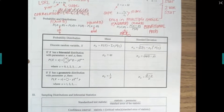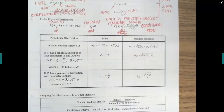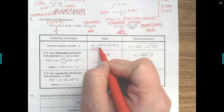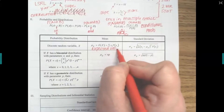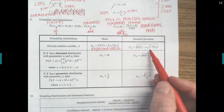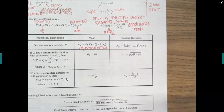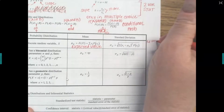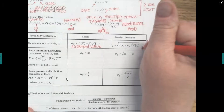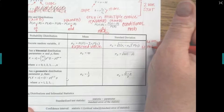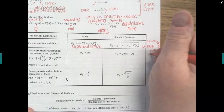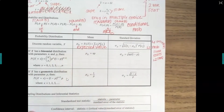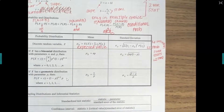We also talked about discrete random variables. The mean is often called the expected value, which can be confusing. To find these using your calculator: put your outcomes in list one and the probabilities in list two, then run one-variable stats with list two as your frequency list. That gives you both the mean and standard deviation for the discrete random variable x.